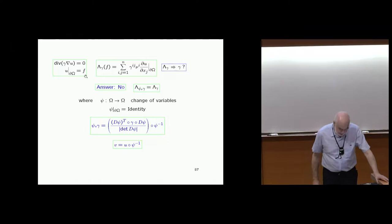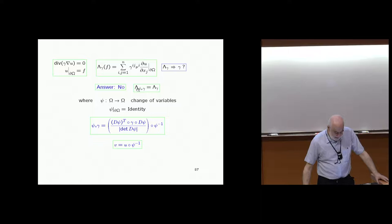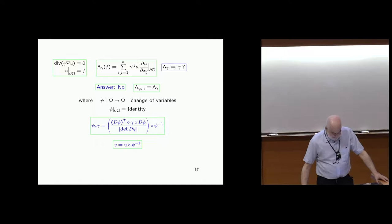The answer is no. There is a large class of non-uniqueness. The Dirichlet-to-Neumann map of the push-forward of the conductivity is the same as the Dirichlet-to-Neumann map of the conductivity for any change of variables which is the identity at the boundary. This is a very large class of non-uniqueness because it is infinite-dimensional.